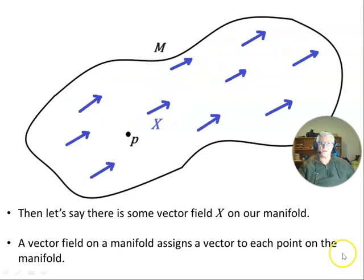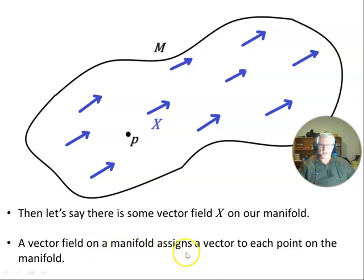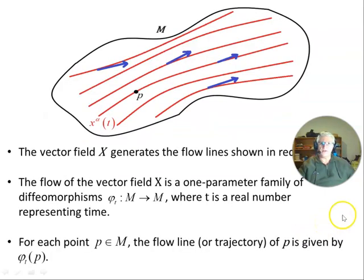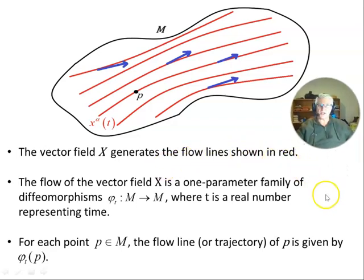So let's say there is some vector field X on our manifold, shown in blue. A vector field on a manifold assigns a vector to each point on the manifold. The vector field X generates the flow lines shown in red — these are the integral curves of the vector field.